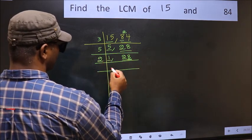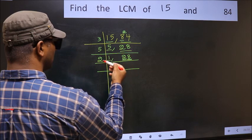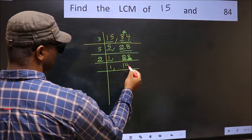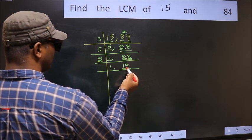So take 2. First number 2. When do we get 2 in the 2 table? 2 times 1 is 2. The other number 8. When do we get 8 in the 2 table? 2 times 4 is 8. Now here we have 14.